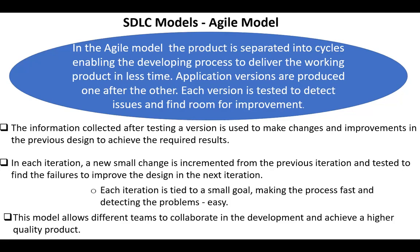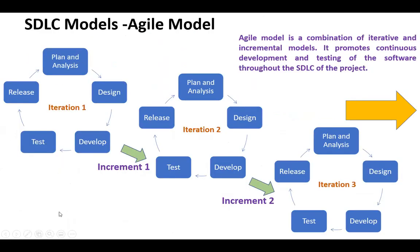In each iteration, a new small change is incremented from the previous iteration and tested to find failures and improve the design in the next iteration. Each iteration starts with a small goal, making the process fast and problem detection easy. This model allows different teams to collaborate in the development and achieve a higher quality product. The Agile model is a combination of iterative and incremental models, and it promotes continuous development and testing of the software throughout the SDLC of the project.